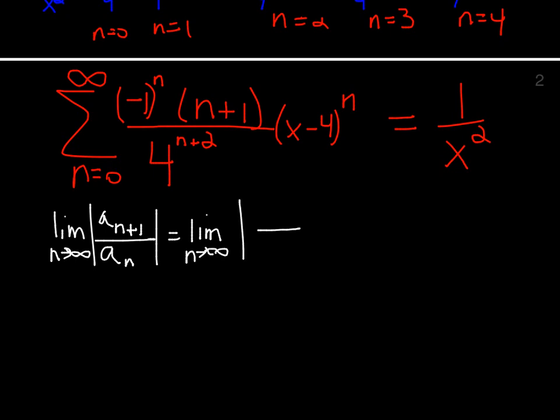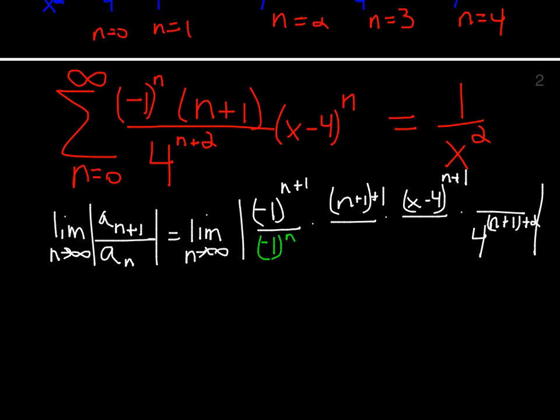Recognizing the number of terms we have, 1, 2, 3, 4 terms, we have negative 1 to the n plus 1, n plus 2, x minus 4 to the n plus 1. And then the denominator, 4 to the n plus 1 plus 2. And then we'll have the associated n terms: negative 1 to the n, n plus 1, x minus 4 to the n, and 4 to the n plus 2.